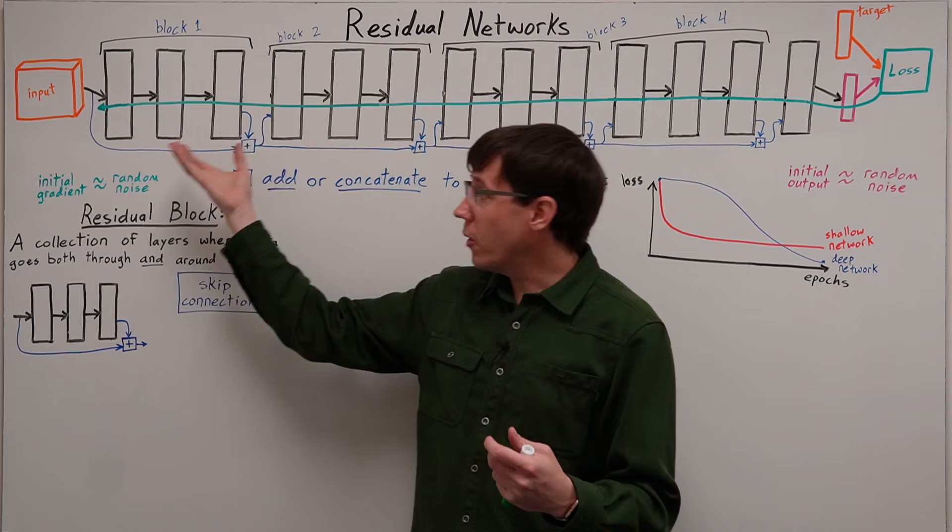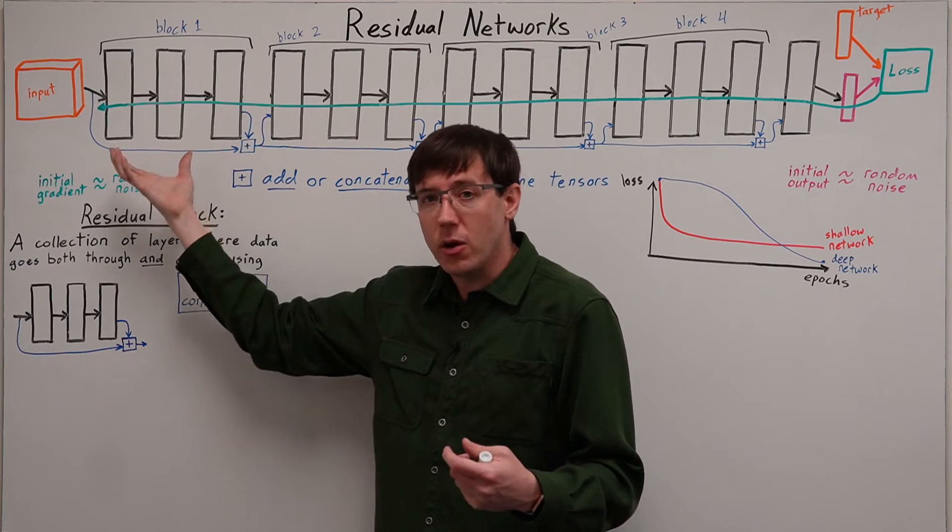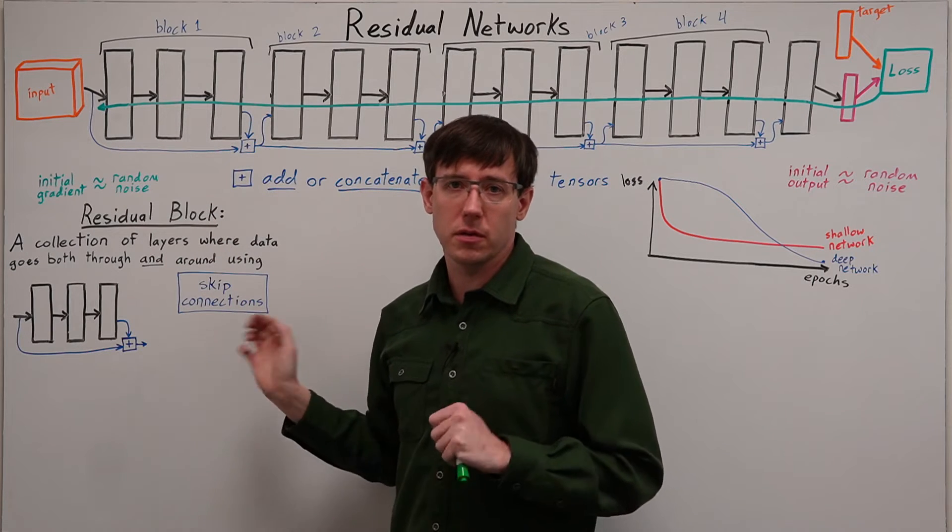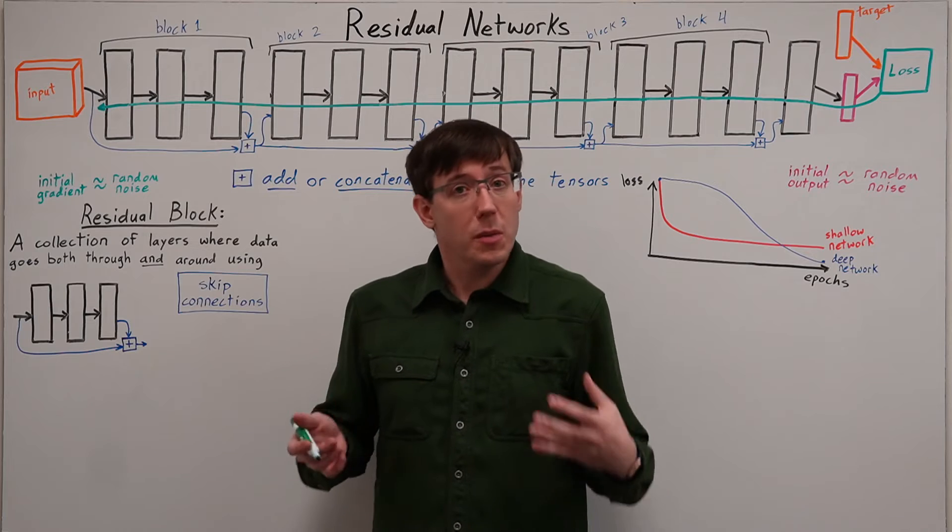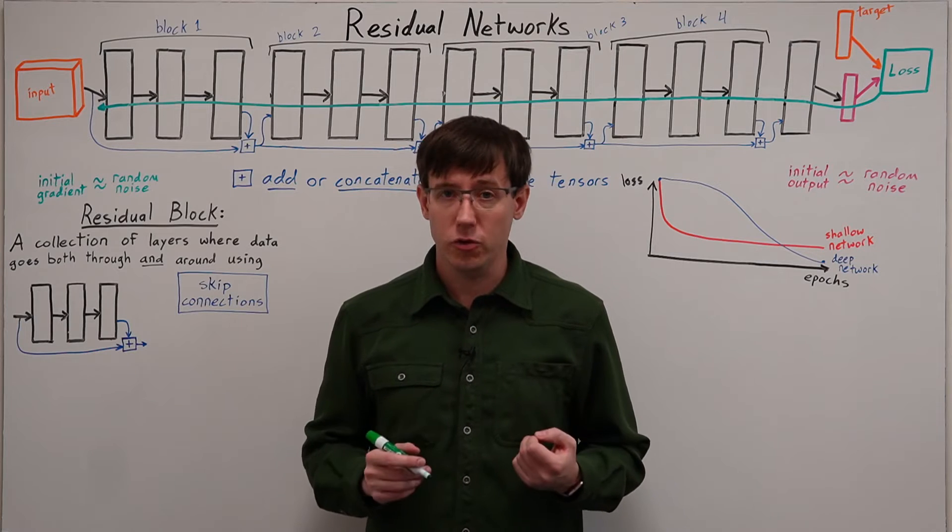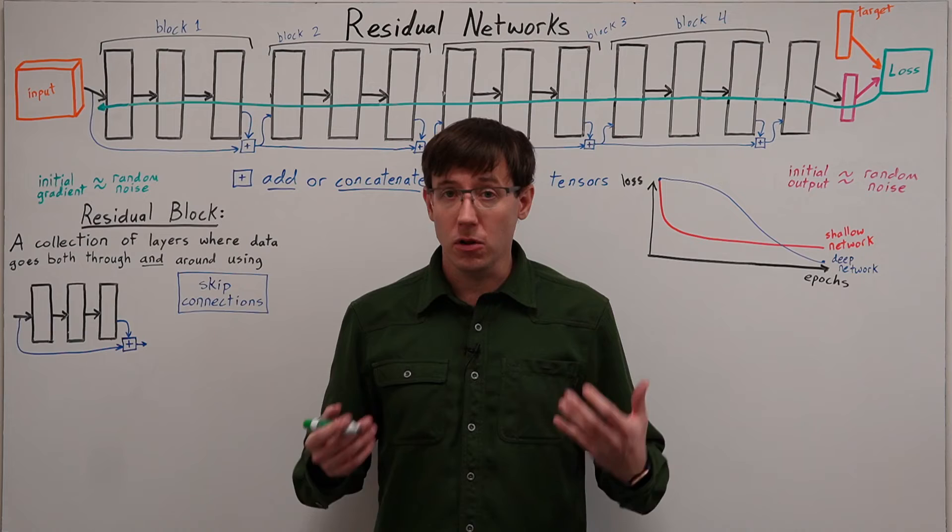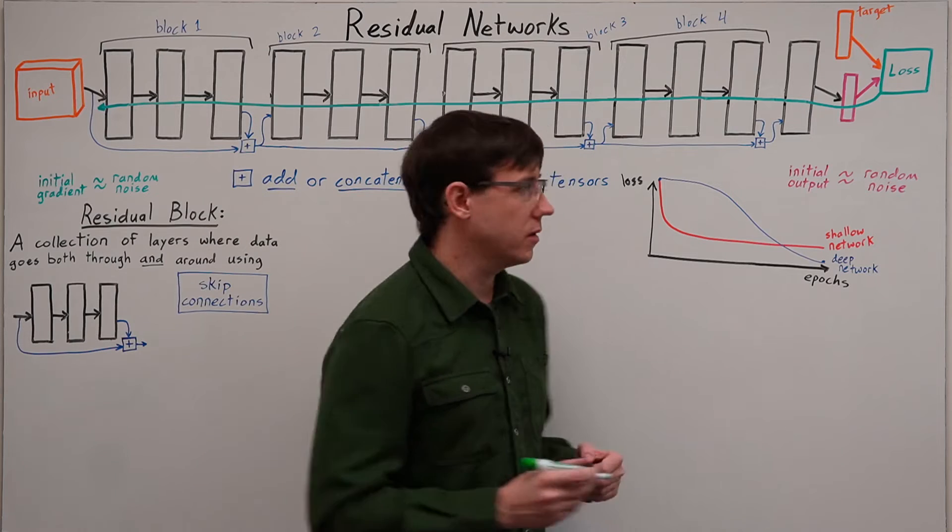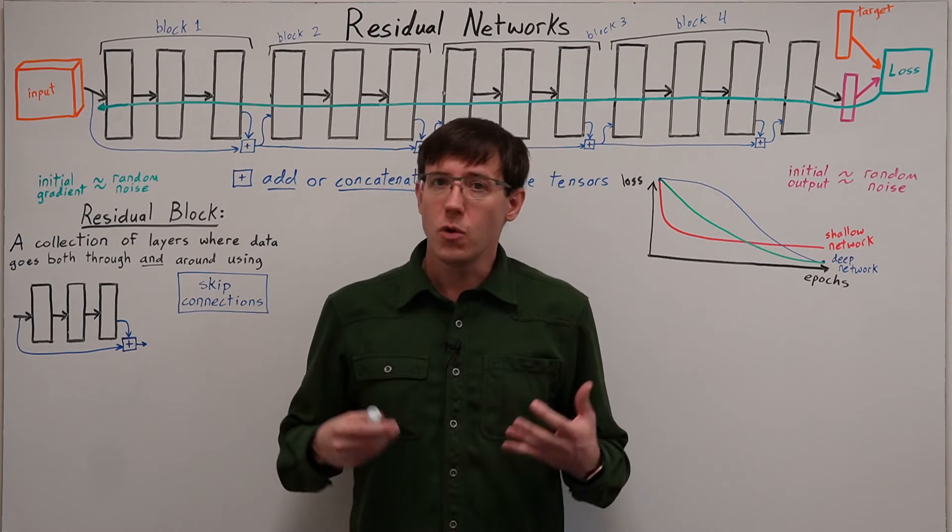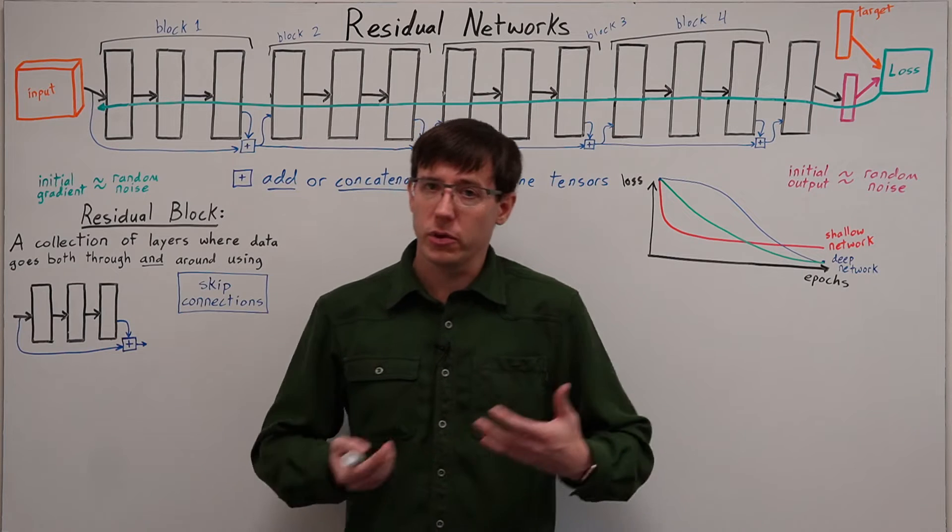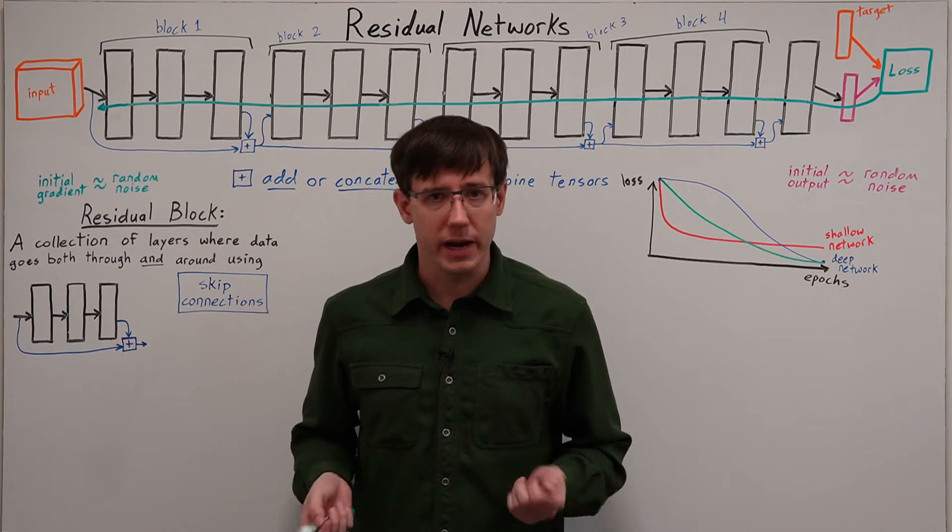The result is now a network that is built out of residual blocks. And we hope that these skip connections will accelerate training and make our loss graph look more like this. So why is it reasonable to expect that networks built out of residual blocks will be easier to train?